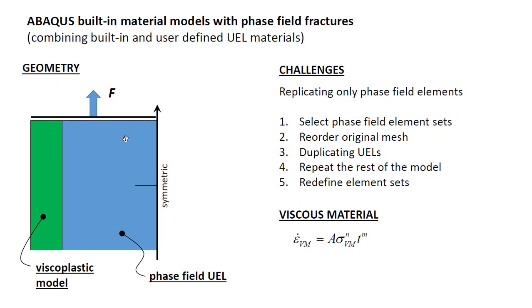We have two different materials in the same plate with an initial notch. The right part is going to be modeled with the phase field UEL, while the left is going to have a viscoplastic, a little bit harder, more rigid material.